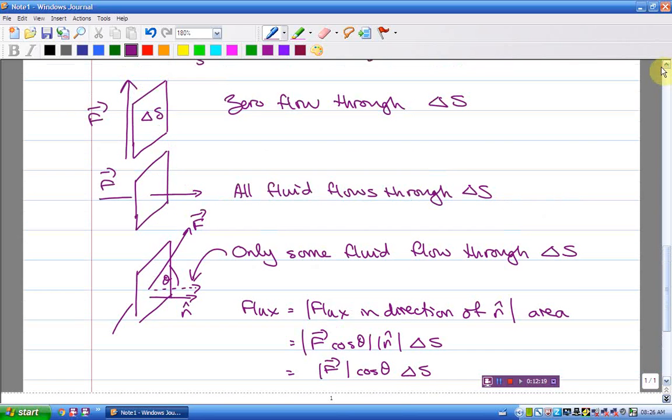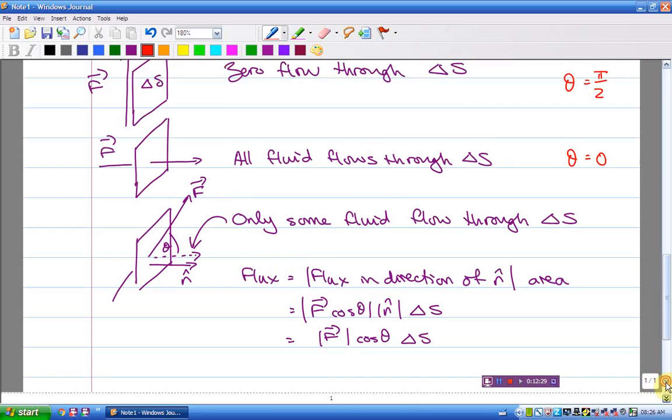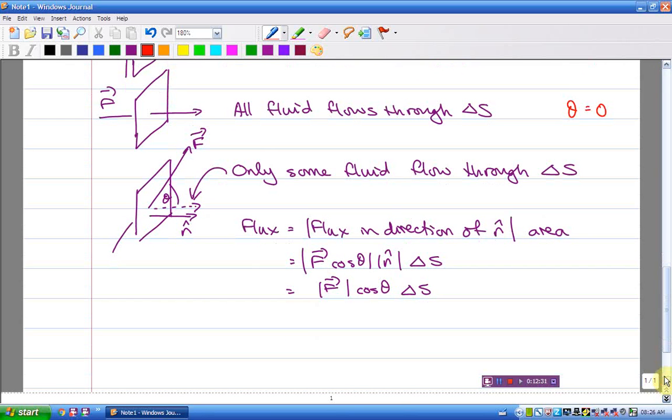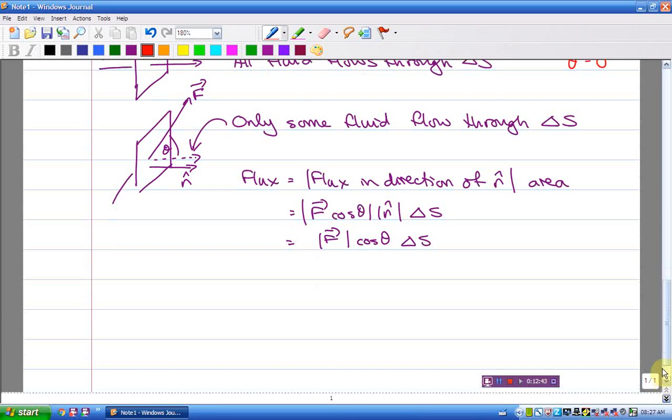So just to kind of go back, this one over here would be theta equals pi over 2 and cos of pi over 2 is 0. And this one over here, theta is equal to 0 and cos of 0 is 1. So in the first case, we have none of F's in the direction of N. In the other, we have all of F's in the direction of N. And for this general case, we have some of F's in the direction of N.